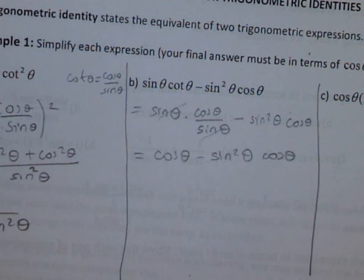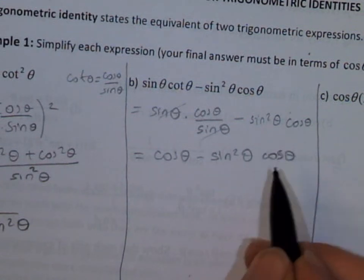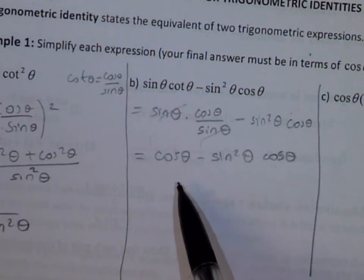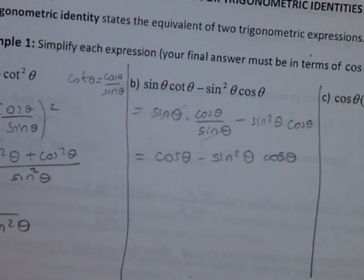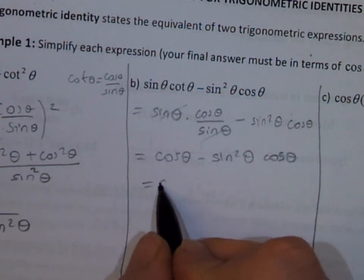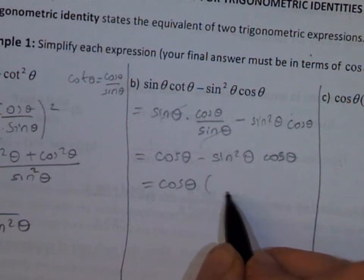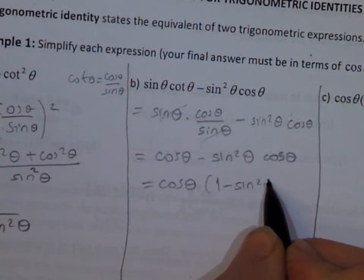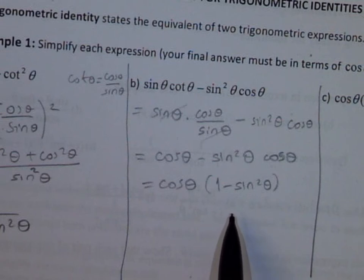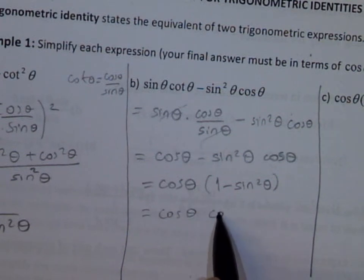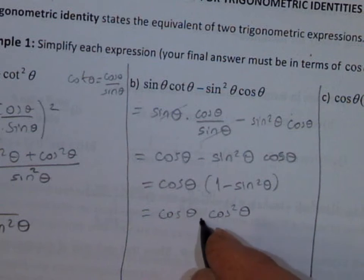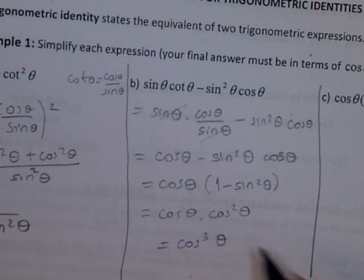We've written everything in terms of sine and cosine, but we can simplify further. We can factor out cosine theta. Then we see 1 minus sine squared theta, which equals cosine squared theta. So we get cosine cubed theta.